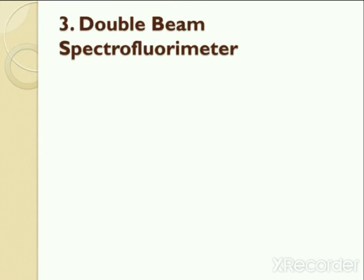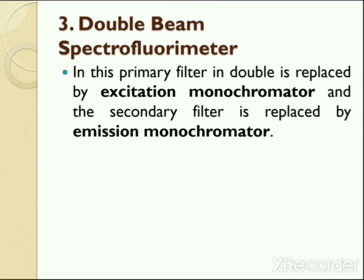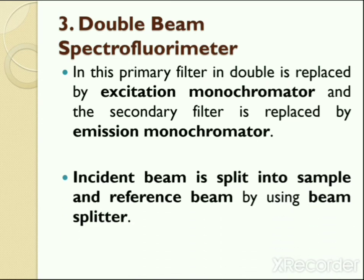The most advanced type of instrument used in fluorimetry is the double beam spectrofluorimeter. In this type, the primary filter is replaced by an excitation monochromator and the secondary filter is replaced by an emission monochromator. The work of a monochromator is to convert polychromatic light into monochromatic light; they can isolate a specific range of wavelength or a particular wavelength of radiation from a source. The excitation monochromator provides suitable radiation for excitation of molecules, while the emission monochromator isolates only the radiation emitted by the fluorescent molecules. In the double beam spectrofluorimeter, the incident beam is split into a sample beam and a reference beam using a beam splitter.